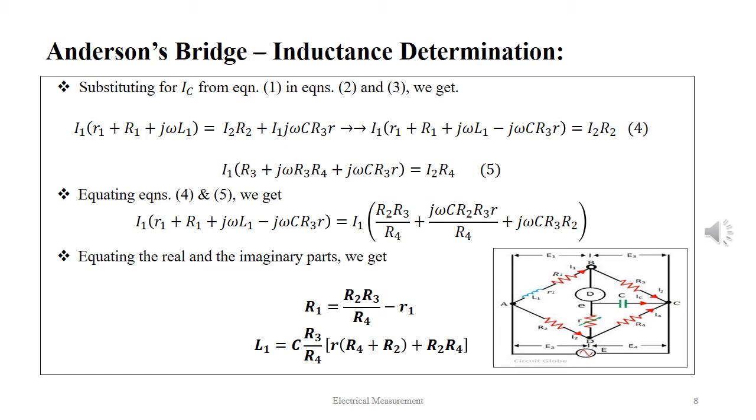Translating to I1 into small r1 plus capital R1 plus J omega L1 minus J omega C R3 r equal to I2 R2.